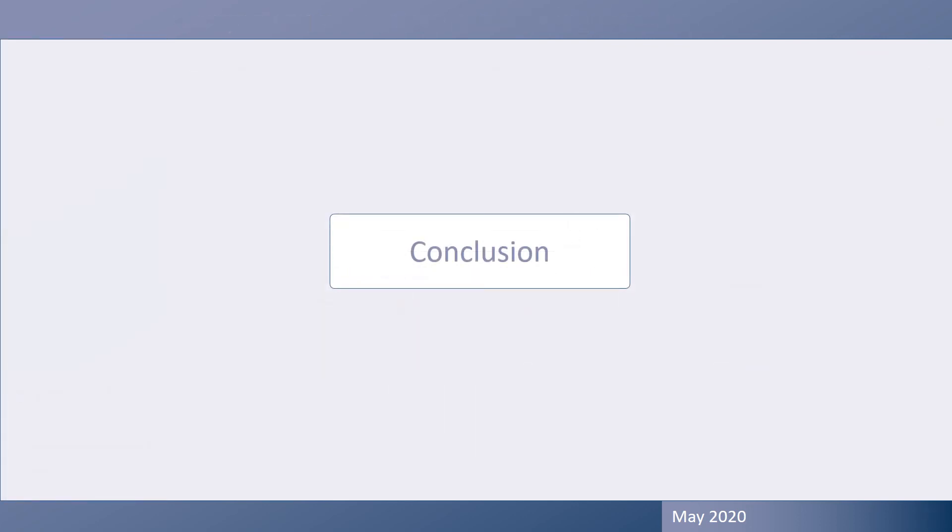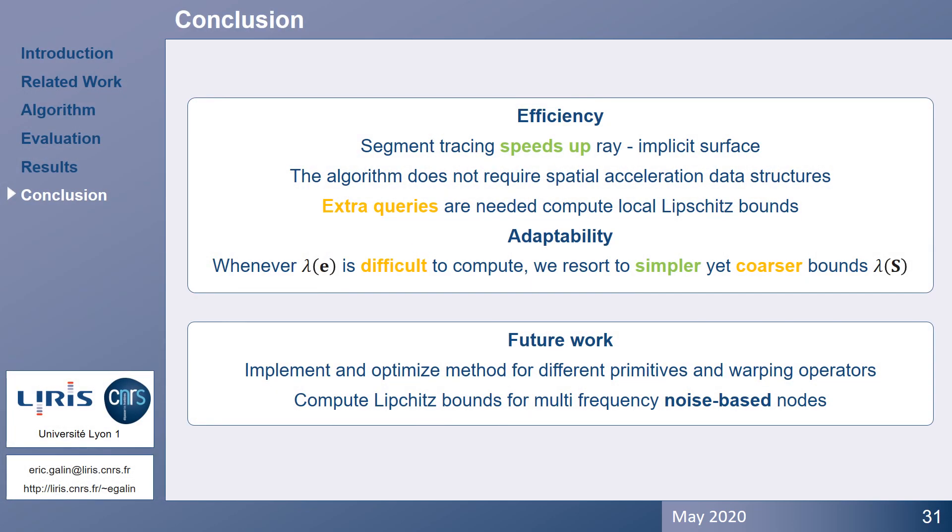We are about to finish. Let's review and conclude. We have presented a method for computing the local Lipschitz bound that allows us to better adapt the marching distance and speed up the ray-implicit surface intersection computation by one to two orders of magnitude. Accelerations come at the price of extra queries to compute the local Lipschitz bounds using different strategies.